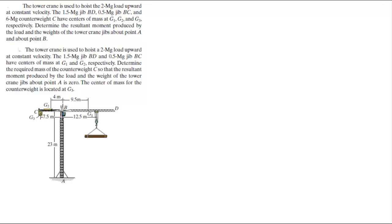You've got this lever arm with a force right at g1 — that's for the load — right at 12.5 meters away from b. You've got the weight of the assembly bd right at g1, a weight at g2, and the balancing weight. Let's calculate each one.